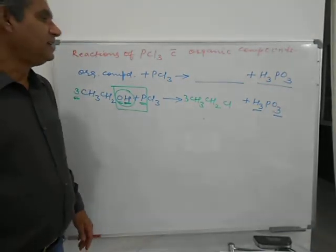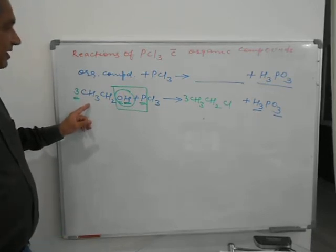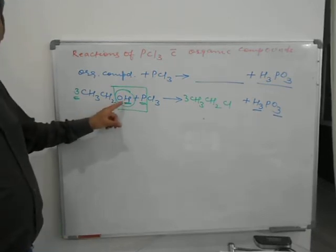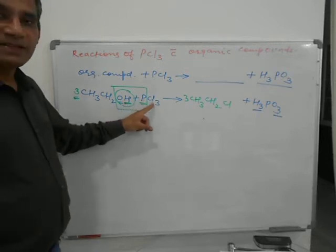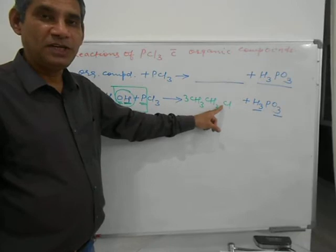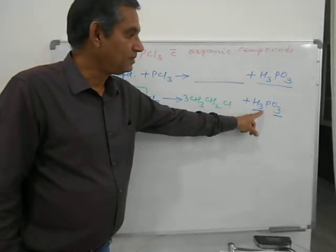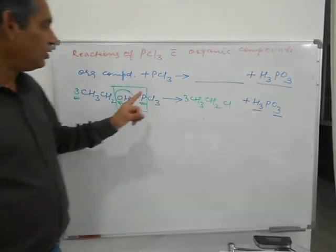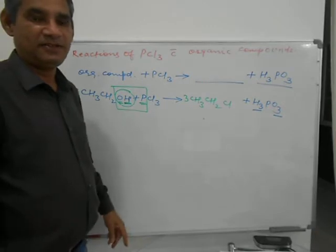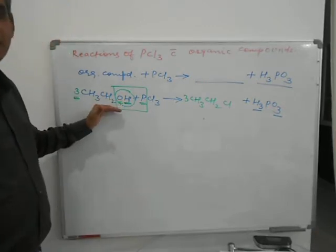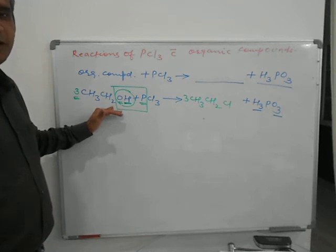Chloroethane will be the main organic product and phosphorous acid will also be formed. See how many times this reaction appears in your syllabus: in chemical properties of ethyl alcohol, chemical properties of PCl3, method of preparation of chloroethane, and method of preparation of phosphorous acid. In inorganic chemistry it appears twice, and in organic chemistry also twice — so this is not one reaction, it appears four times in your syllabus.